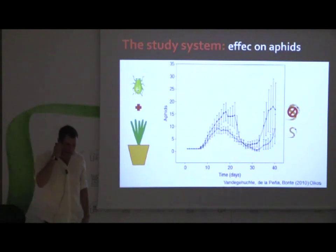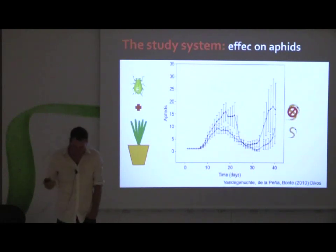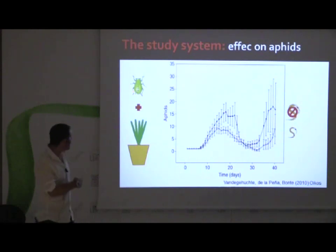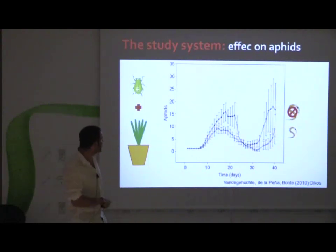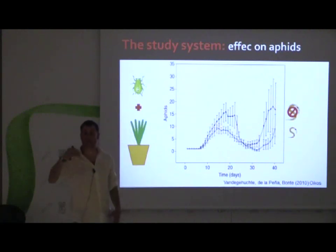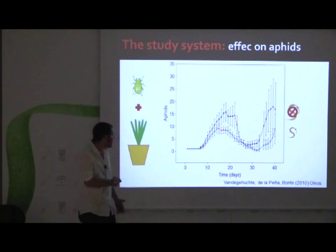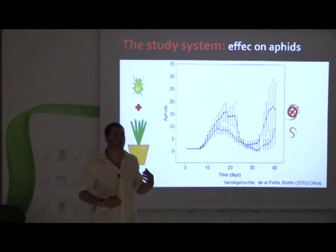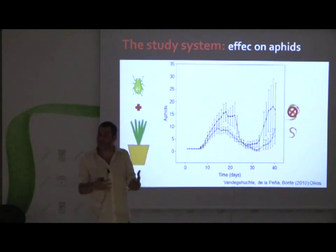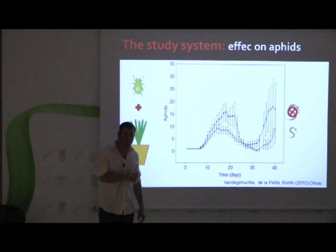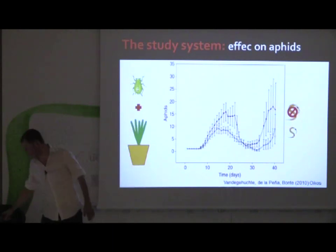We used classical experiments in which we had our plants — Amorphila and aphids — and these plants were treated with nematodes or without nematodes. We could see that if the plants didn't have nematodes, the multiplication of the aphids was much higher. There was something happening — they affect each other. But of course, this is quite artificial, so we wanted to see whether this happened also in the field.